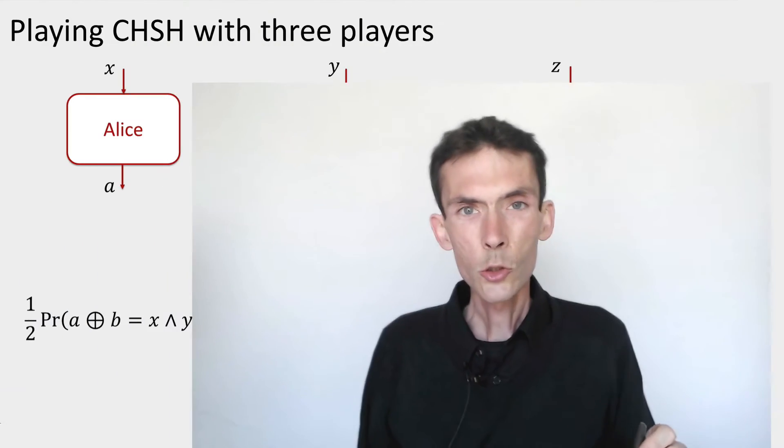What we're going to see in this module is that the monogamy of entanglements has consequences even at the level of the correlations, of the classical correlations that can be generated from the states.